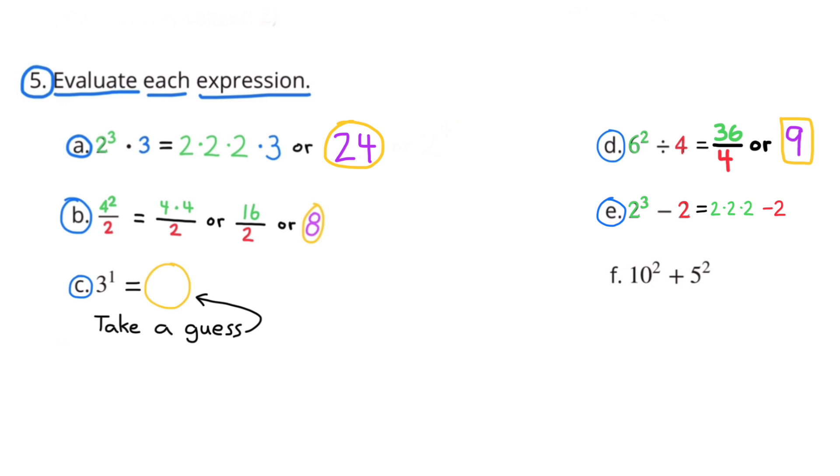Number 5 E. 2 to the 3rd power minus 2. That's the same as 2 times 2 times 2 minus 2. And 2 times 2 times 2 is 8. And 8 minus 2 equals 6.